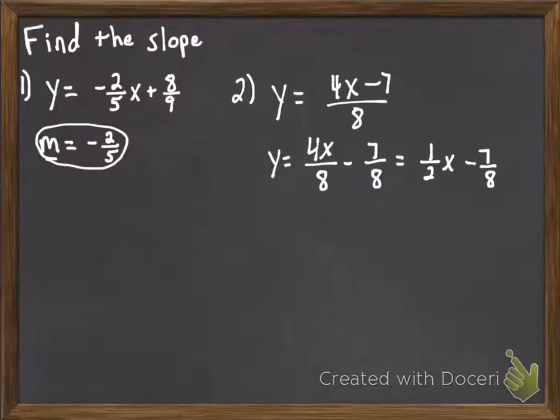so that now it's in the format of number times x, and some other number. So once we've rewritten it into that format, it's really easy to see that the slope is, in simplified form, 1 half.